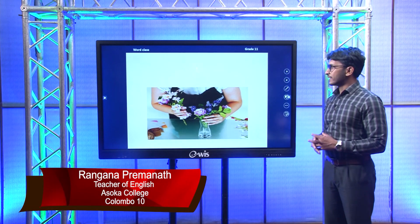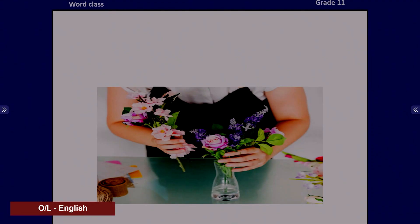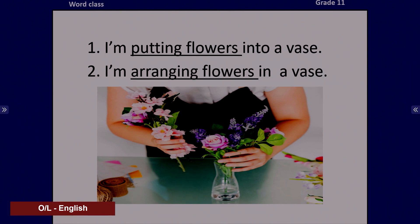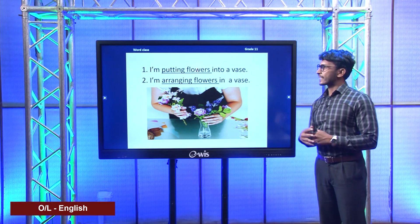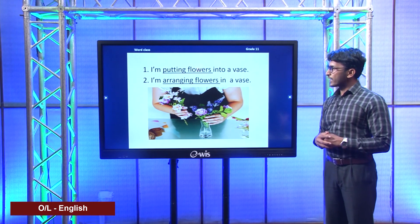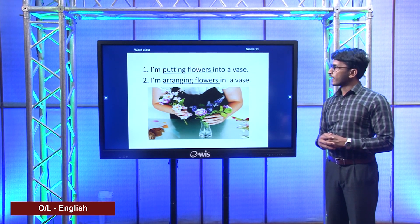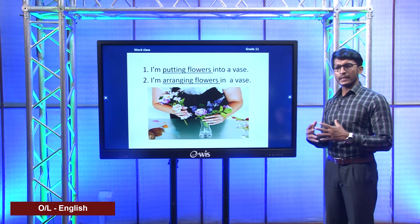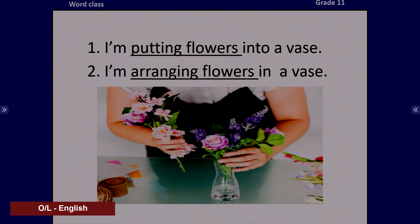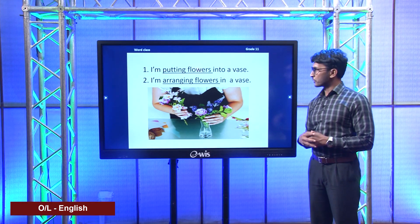To get started, have a look at this picture. What do you think is happening in this picture? Let's see the sentences. The first one: I'm putting flowers into a vase. The second: I'm arranging flowers in a vase. What do you think is the most appropriate one? Yes, it's the second one — I'm arranging flowers in a vase. Do we usually put flowers into a vase or arrange them nicely to make it more beautiful? Yes, we arrange flowers to make them more beautiful.